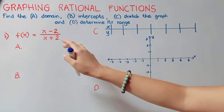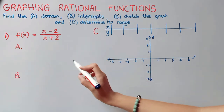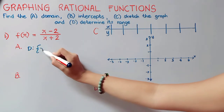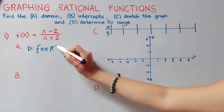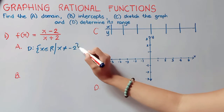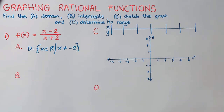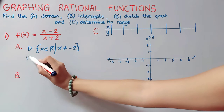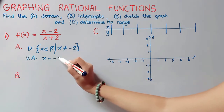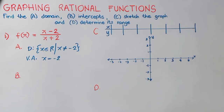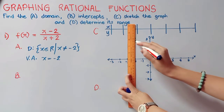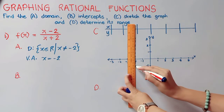Our domain here is all real numbers except those values of x that will make our denominator zero, since it will make our rational expression undefined. So x except negative 2. Therefore, our vertical asymptote here is the line x is equal to negative 2. An asymptote is a line that the function may approach but does not reach. Let us now plot our vertical asymptote.